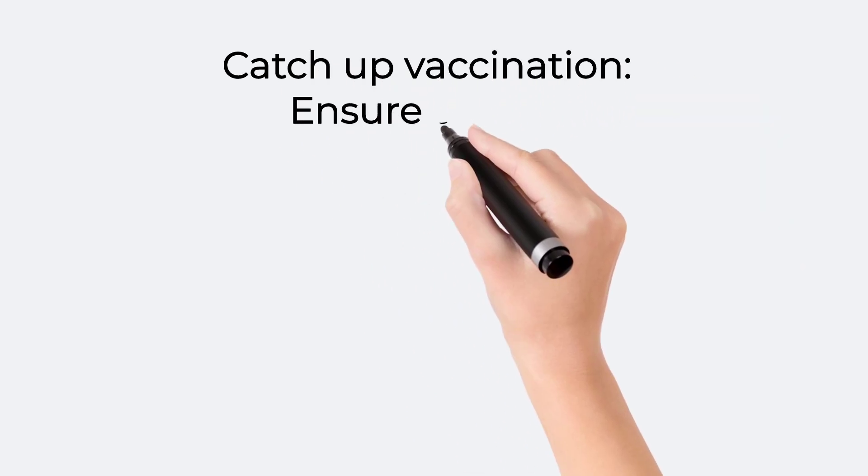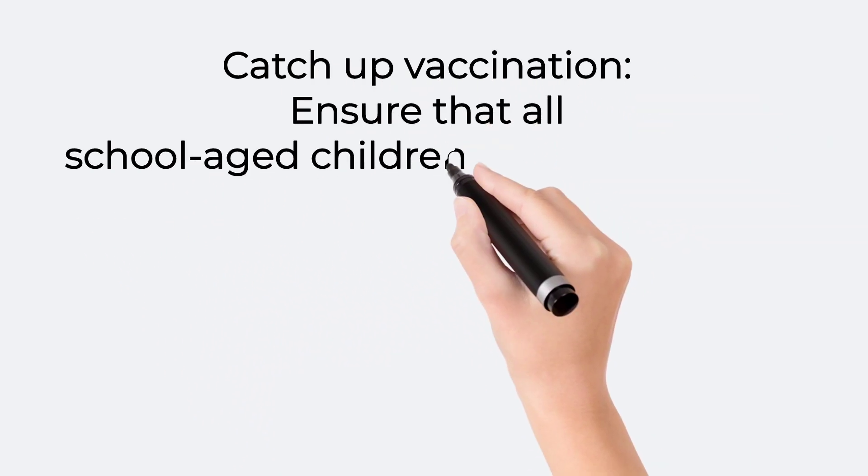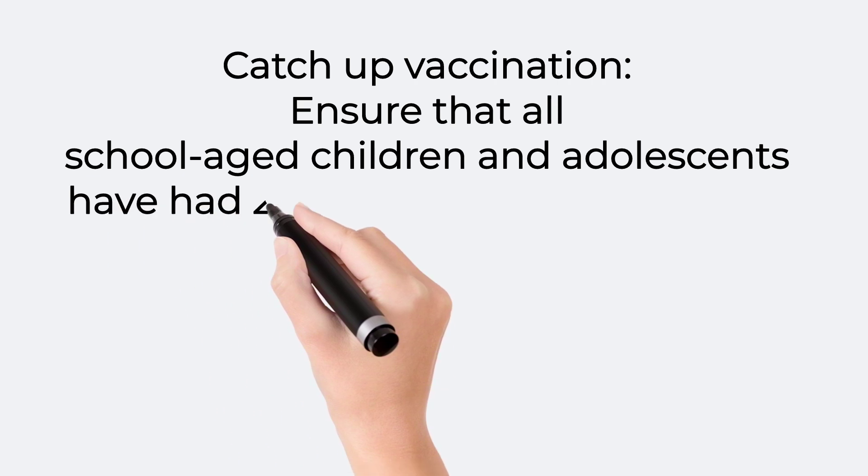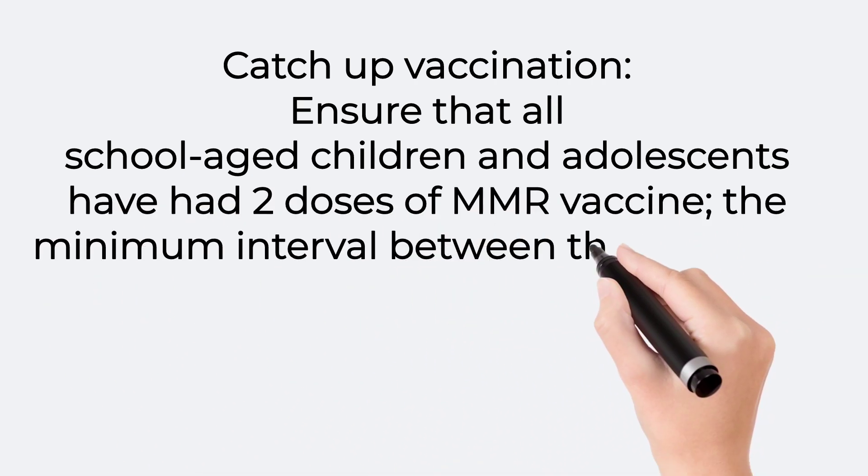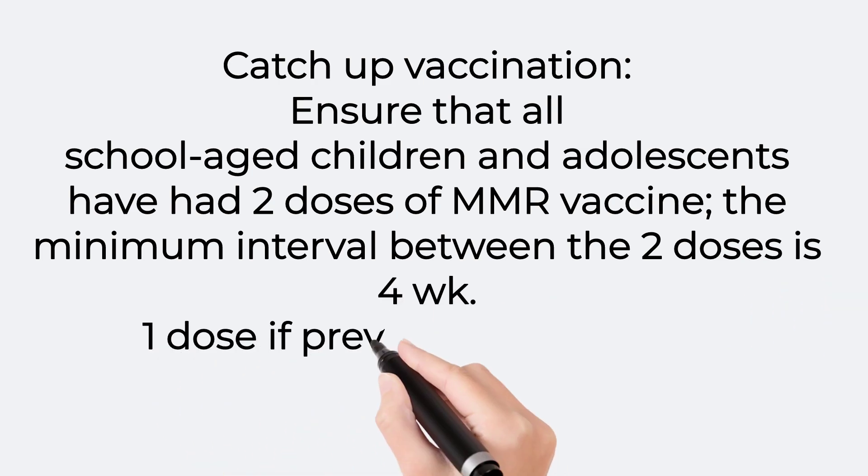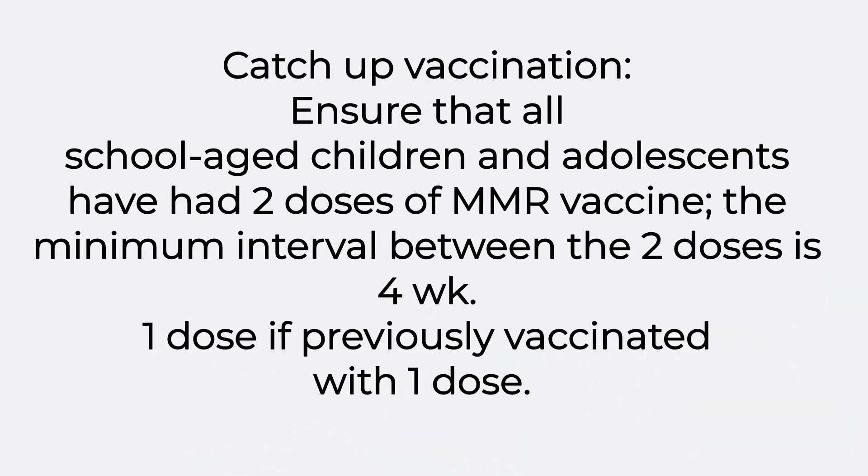Catch-up vaccination: Ensure that all school-aged children and adolescents have had two doses of MMR vaccine. The minimum interval between the two doses is 4 weeks. One dose if previously vaccinated with one dose.